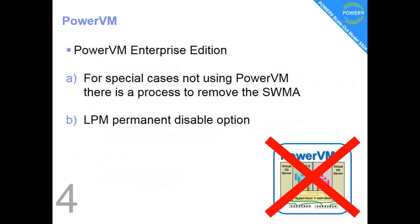Fact number four: for PowerVM, two special cases. One is that some people really don't want PowerVM — it tends to be single, dedicated, smaller machines running IBM i with a single application. We have a mechanism for sorting that out inside IBM. The other one is LPM. We can permanently disable this option. Some software vendors, namely Oracle, will try and charge you double the number of licenses if LPM is available. So we can switch that off permanently with a VET code on your HMC.